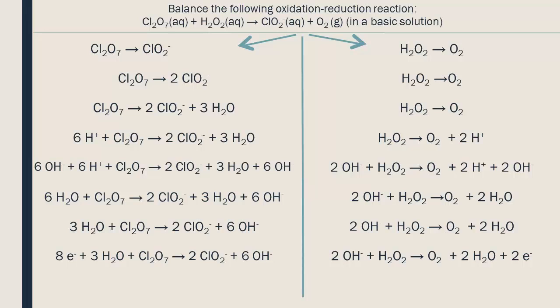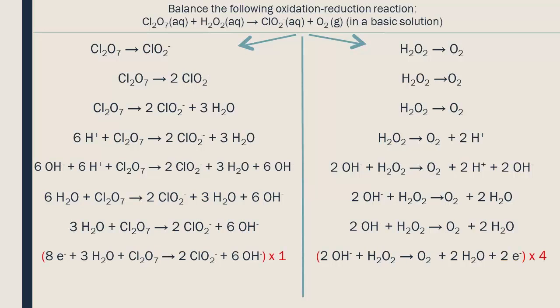To be able to put the half-reactions back together, we need to make them have the same number of electrons. To do this, we multiply one or both of the half-reactions by the lowest common factor. Here, we have eight electrons in the first reaction and only two in the second. By multiplying the second reaction by four, we finish with eight electrons in each, and they can be cancelled.